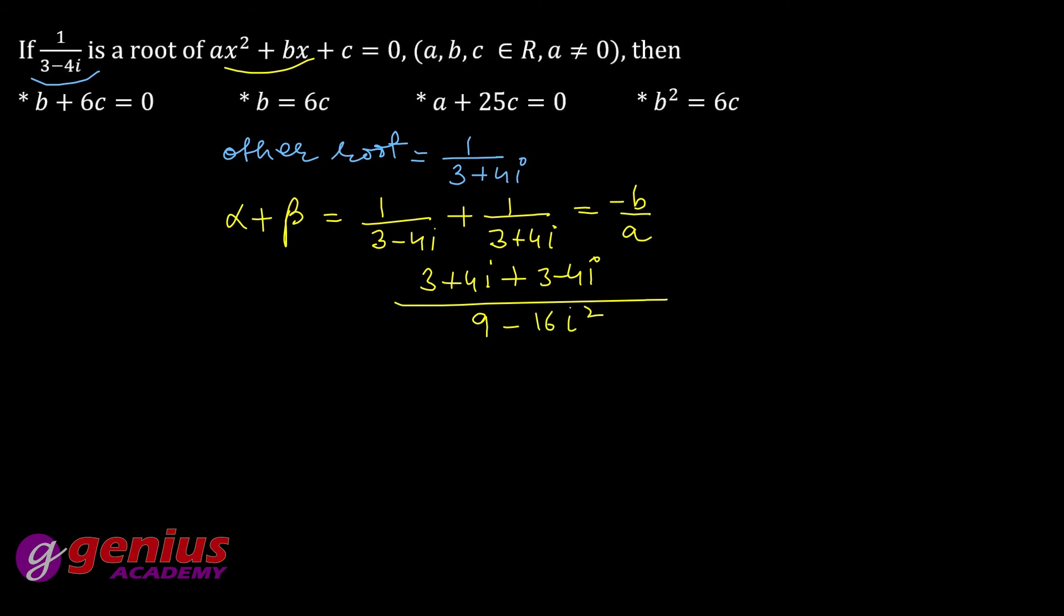Iota square aapka, ye cut do, ye cut gaya, kitna aayega 6. Or yahan pe iota square minus 1 hota hai, to ye 25 hoga minus 16 plus 16 hoga, and idhar tha minus b by a.